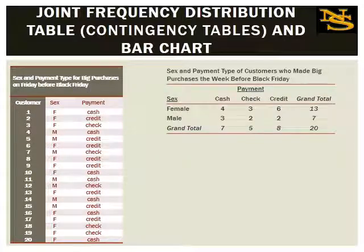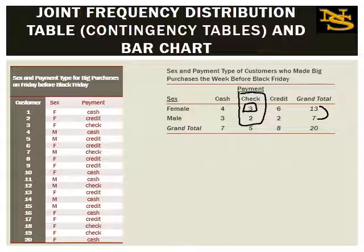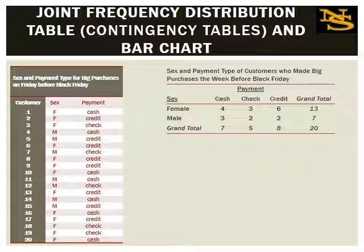Think about it: if we look at this, it appears females are using checks more than males, suggesting we shouldn't implement a no-check policy because we'd alienate female customers. But there are more females than males, so all their numbers are higher to begin with. This table is problematic for sex-based comparisons. It is useful if you just want to see how many customers fit each category — for instance, only five out of 20 paid with check — but not for sex-based comparisons because we have different numbers of males and females.